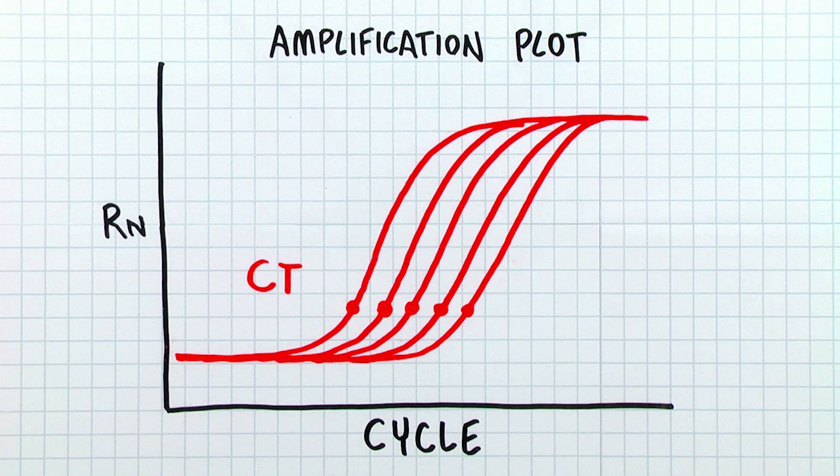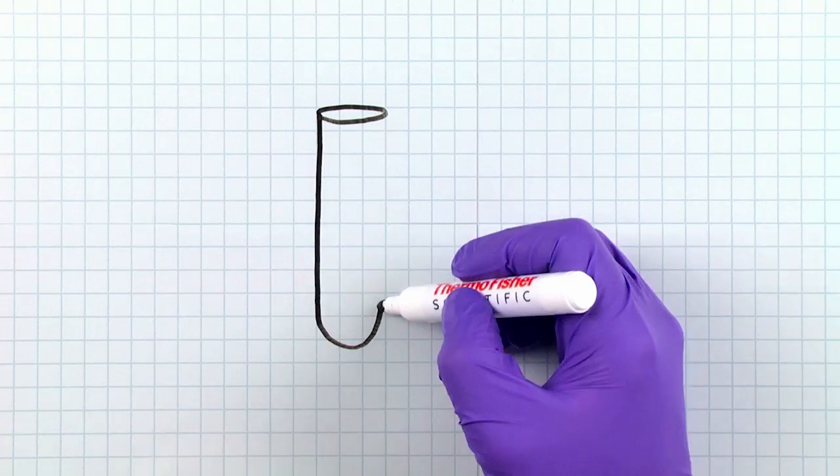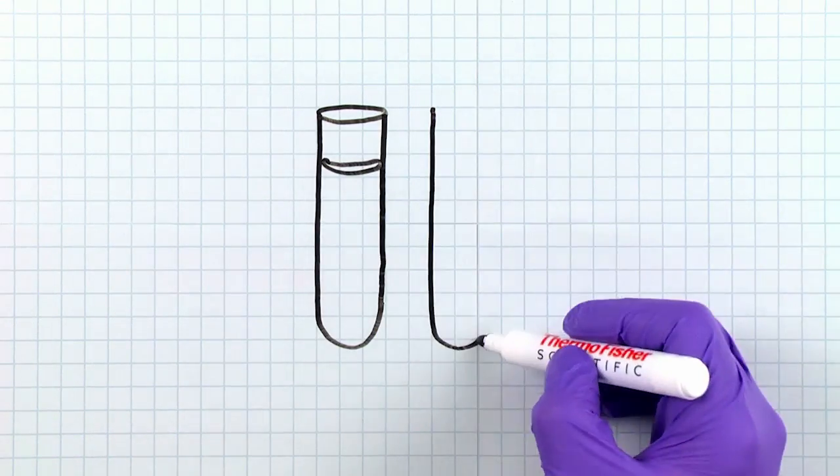The CT value is what ultimately is used to create the standard curve. The CT values are inversely proportional to the concentration of DNA in the standards.